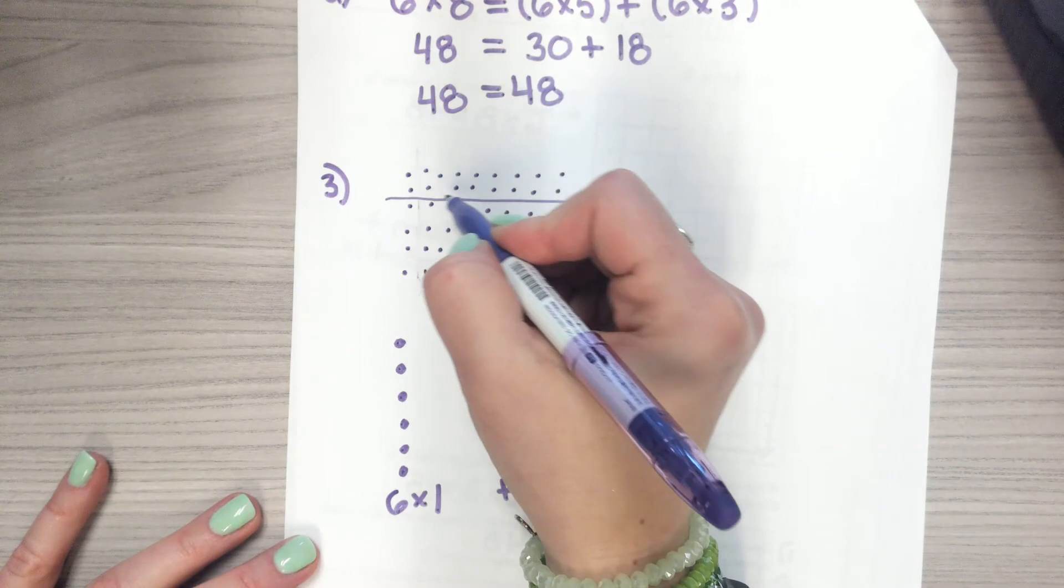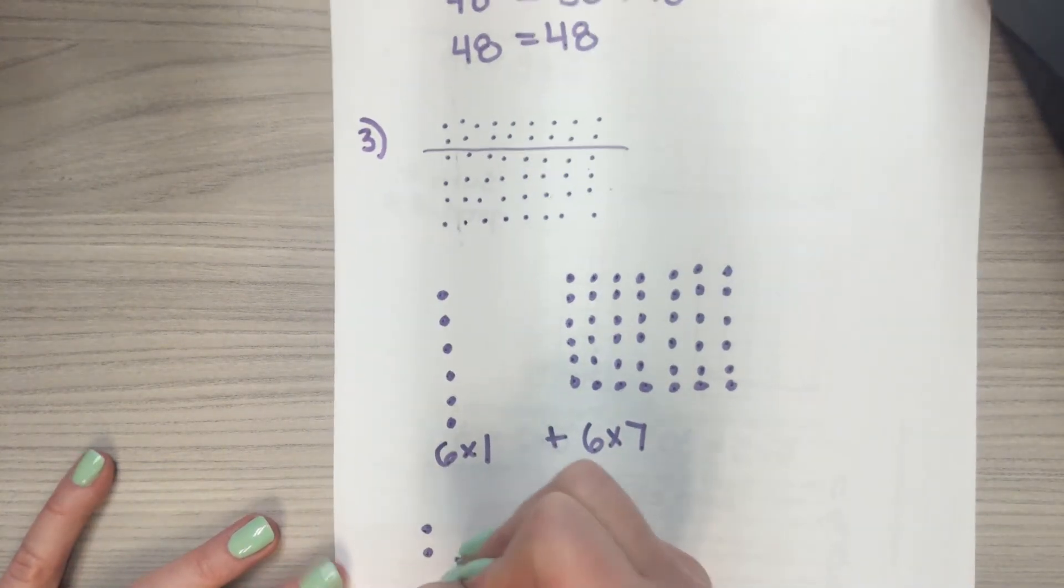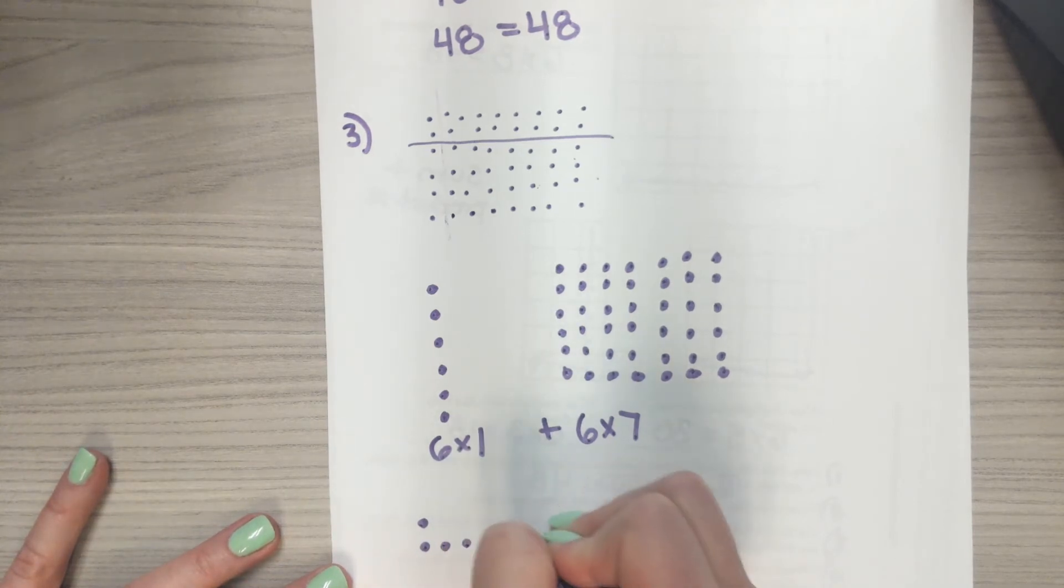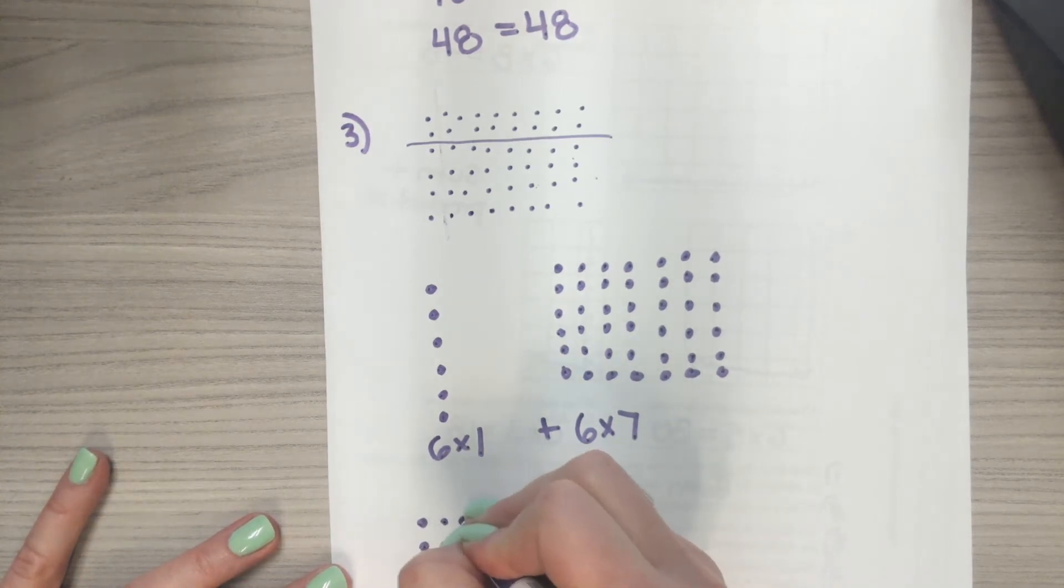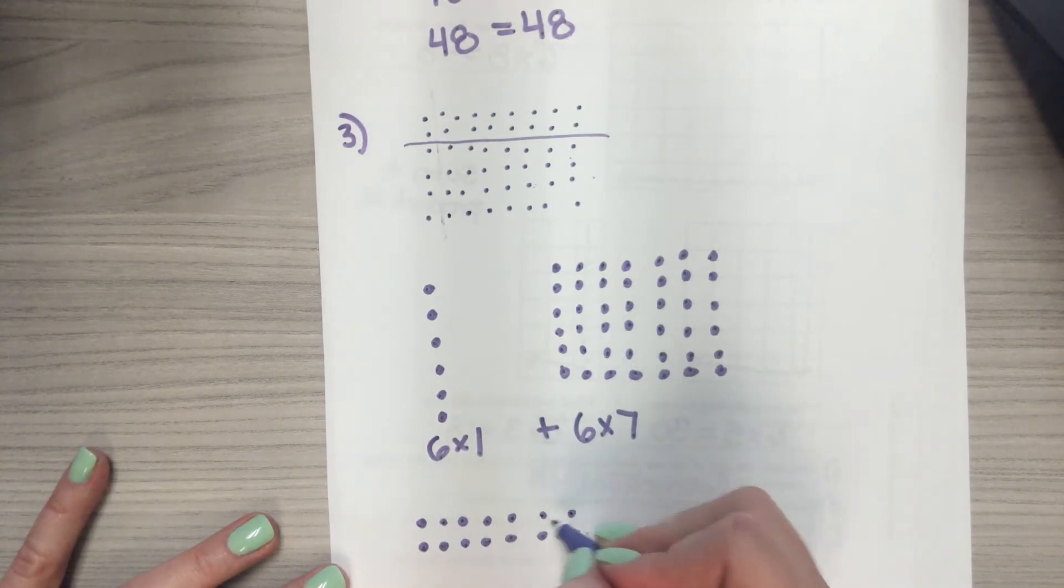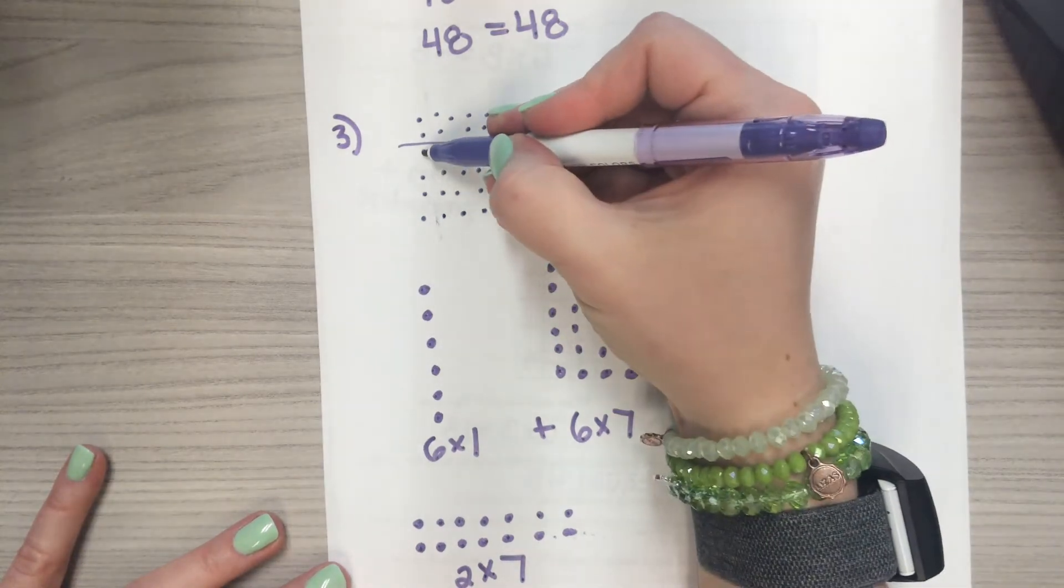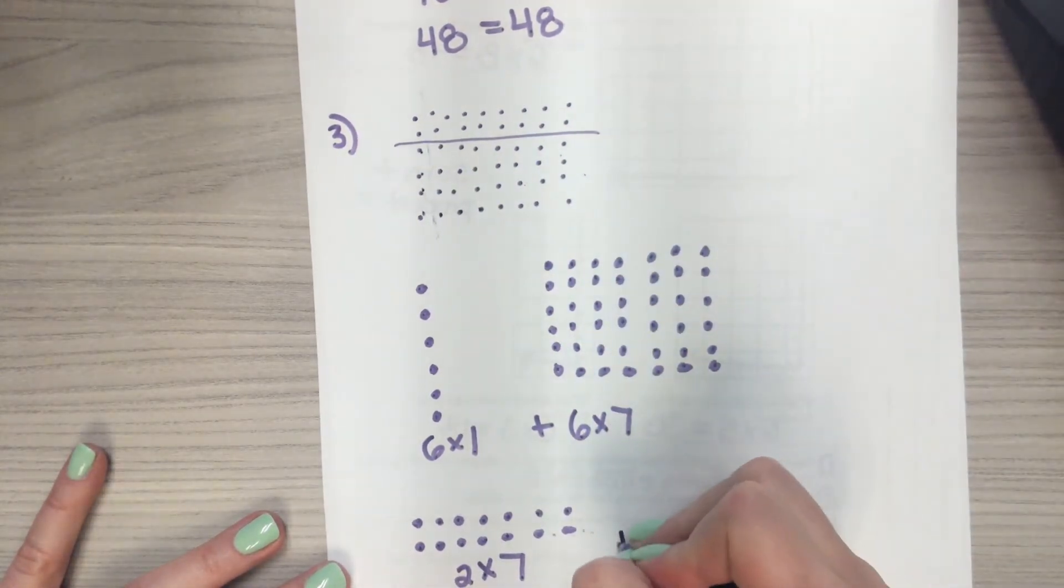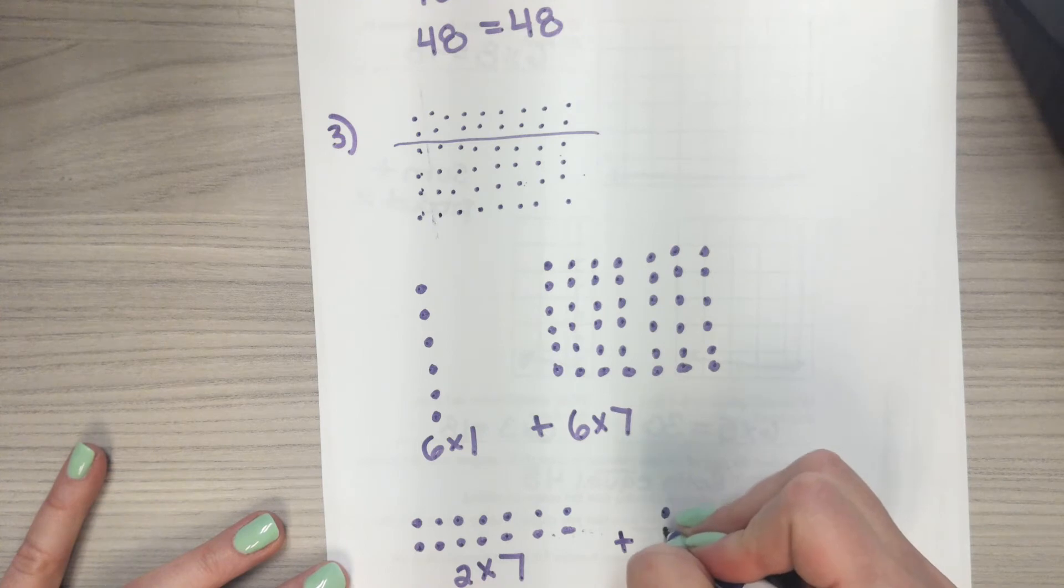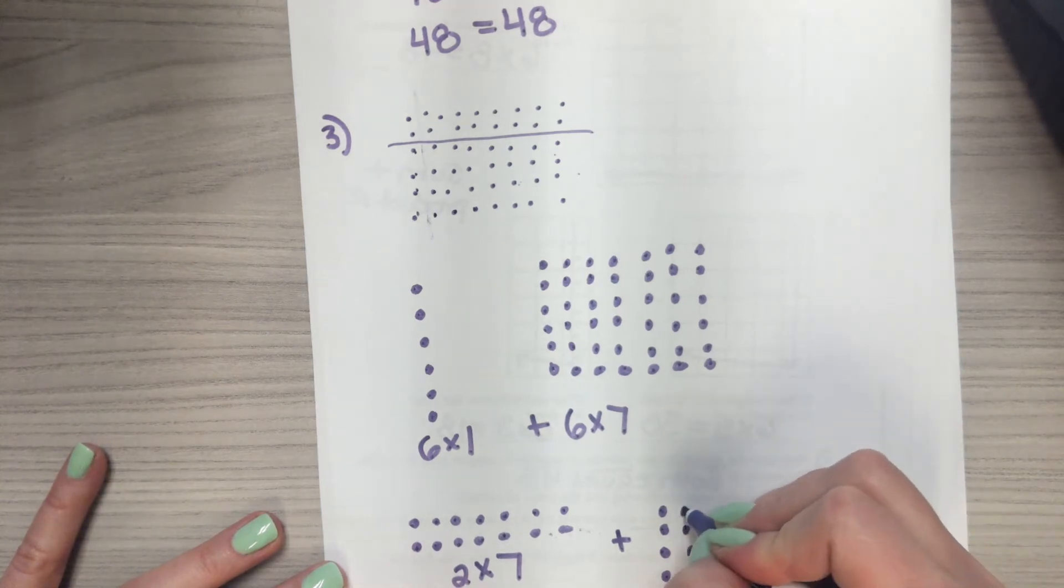So now I have a two by seven. So diving down two, going across seven. One, two, three, four, five, six, seven. One, two, three, four, five, six. One, two, three, four, five, six, seven. So that is a two by seven. And then I have a four by seven plus a four by seven. I'm going to fill those in.